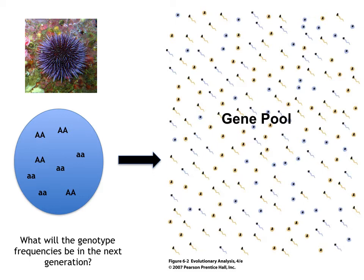But in fact some of those assumptions can be somewhat robust. For instance, you don't need an infinite population size — you can just have a very large one. Or you can mate close to randomly. Let's take one natural population — sea urchins — and see what would happen if that population were in Hardy-Weinberg equilibrium.